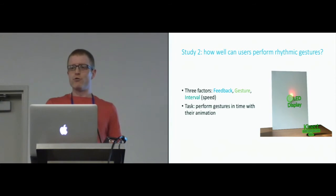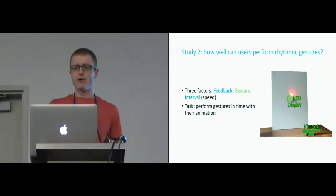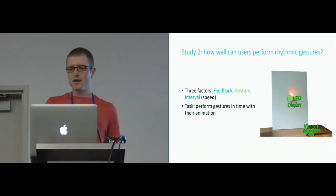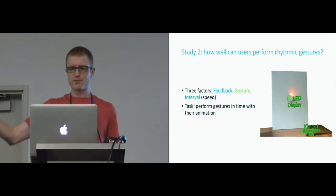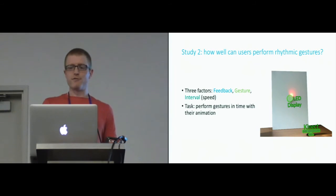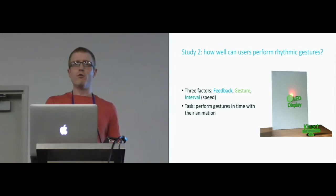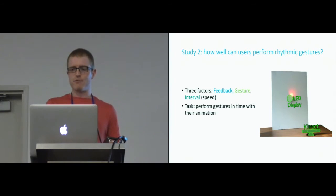Our second study evaluated how well users could perform this type of gesture. We wanted to see if they'd be able to move in time with the animations at different speeds, and we were interested in what role feedback had on gesture performance. We gave four types of feedback: one just used LED animations to show how to move, while the other three gave additional audio and tactile feedback — basically a short tone at the end of each part of the gesture. The task was to match a rhythmic gesture, meaning to perform the correct gesture in time with the animation for approximately three full movements in sync. We gave users a limited amount of time, and measured success rate, how long it took, and collected difficulty ratings.